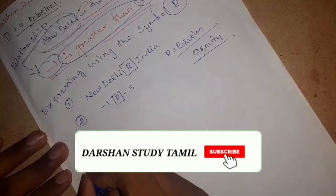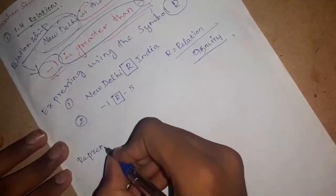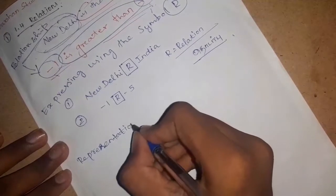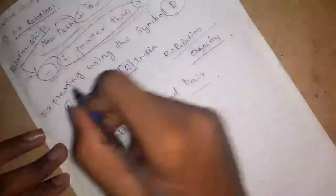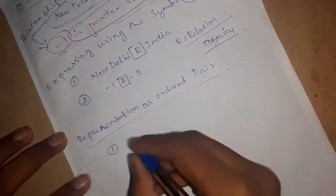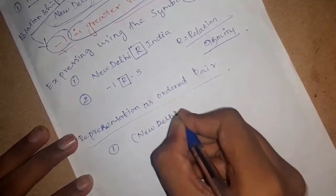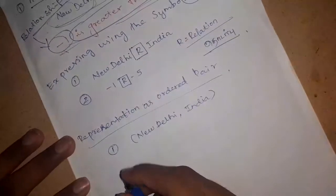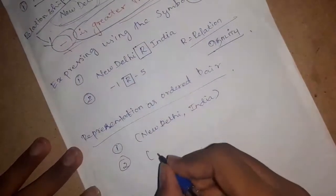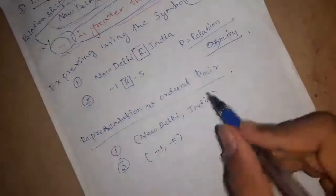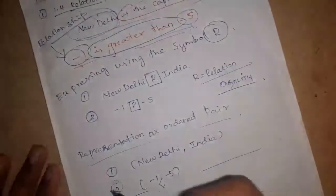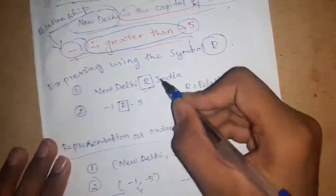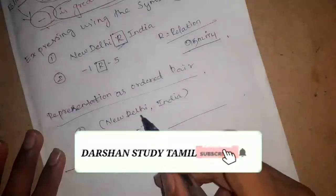Third is representation as an ordered pair. So, first: New Delhi, India — okay. Third: and that is an ordered pair.